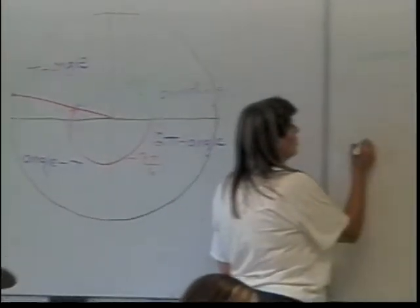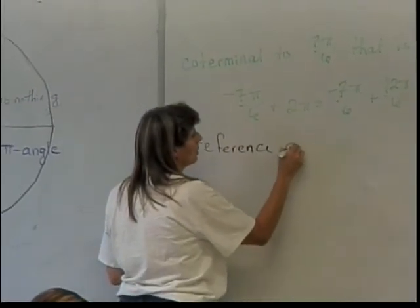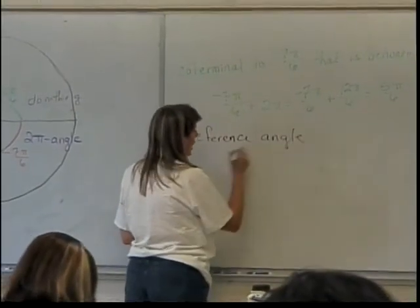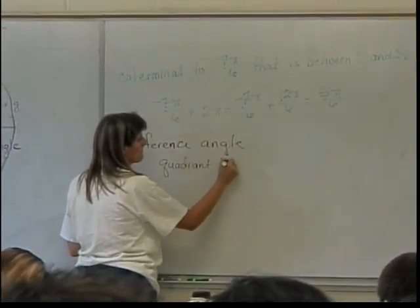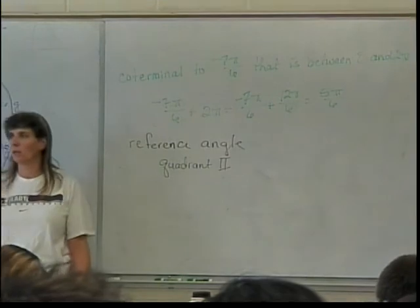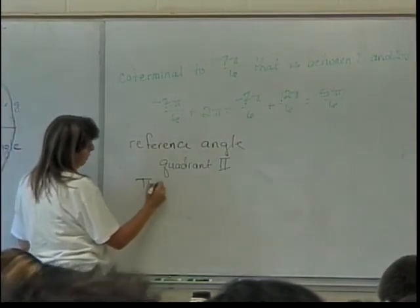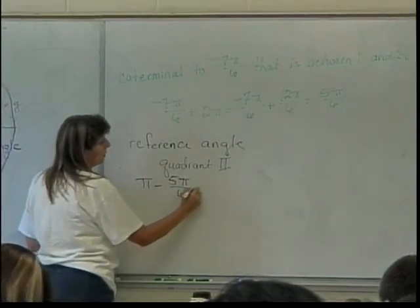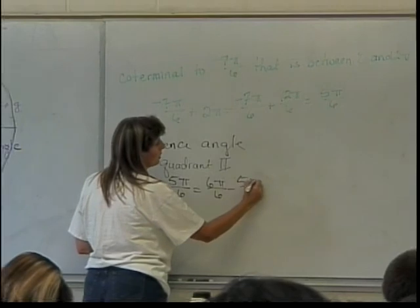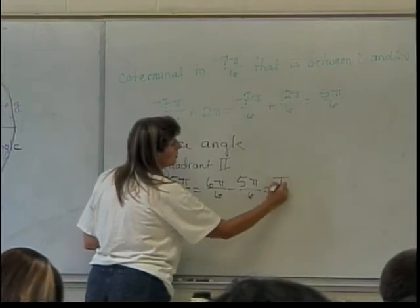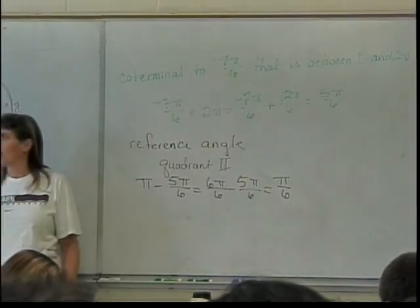Since I'm in quadrant 2, I'm going to do π minus 5π over 6. So that's 6π over 6 minus 5π over 6, which turns out to be just π over 6.